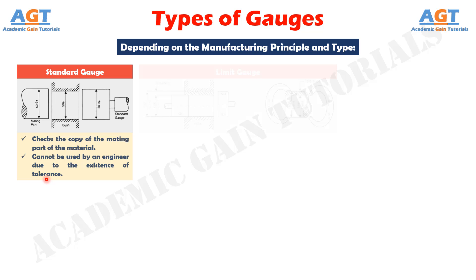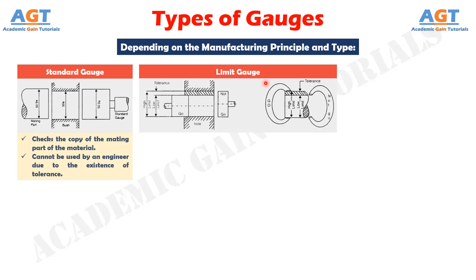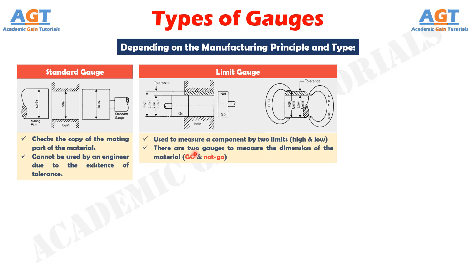Limit gauge. A limit gauge is defined as the gauge that is used to measure a component by two limits — one is high and another is low. So there are two gauges to measure the dimension of the material. Two gauges are the go gauge and the not go gauge. The part of the component has to pass through the go gauge and for the not go gauge it has not to pass. This gauge is widely used in industries.